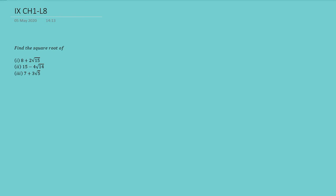Hello students, today we are going to find the square root of these numbers. Looking at it seems complicated because you have probably never thought of something like that. We can find the square root of this kind of numbers — not all, but we are only going to discuss when the roots are of this kind. So the first number we have is 8 plus 2 root 15.